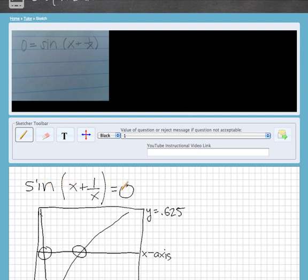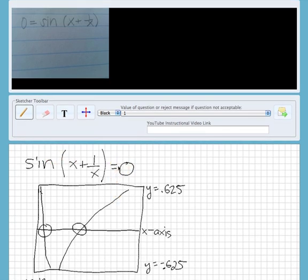So the sine of x plus one over x equals zero. I know you want to find the x values at which the horizontal tangent line is, or the slope is zero. In other words, the horizontal tangent line.